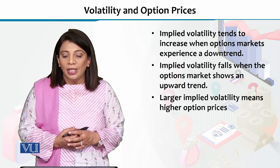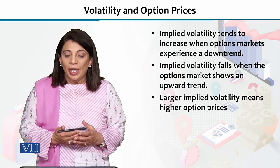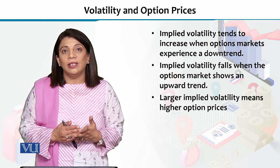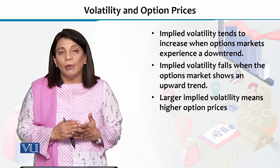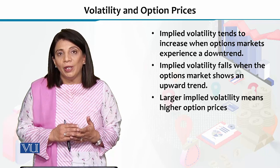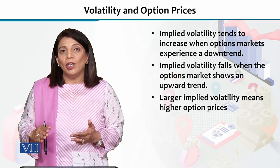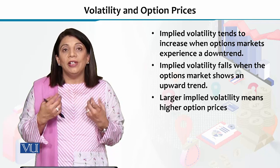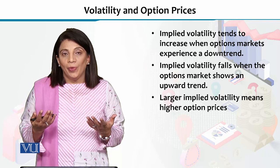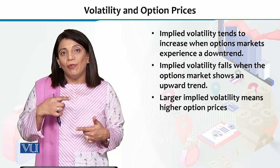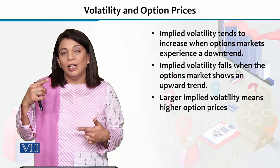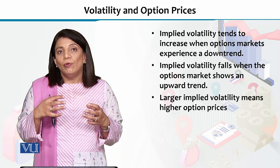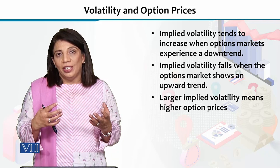Implied volatility tends to increase when options markets experience a downtrend. Jab option market mein overall decline dikhne ko milta hai, toh volatility increase kar jati hai. Aur jab option market achcha perform kar rahi hoti hai, toh phir jo volatility hai, us mein kami ho jati hai.